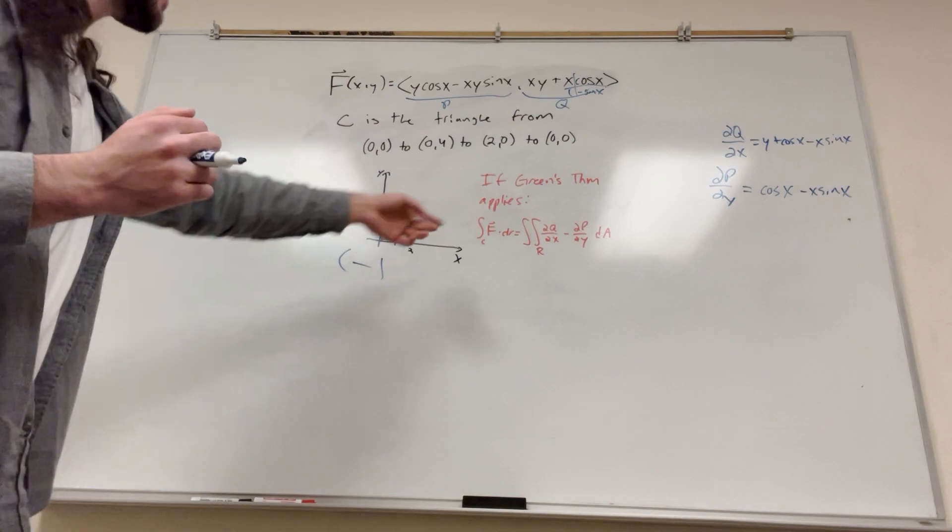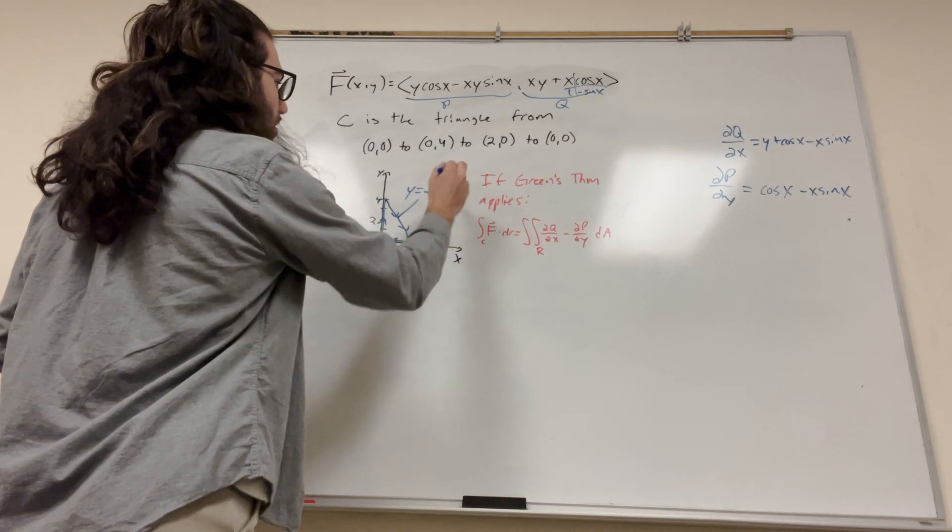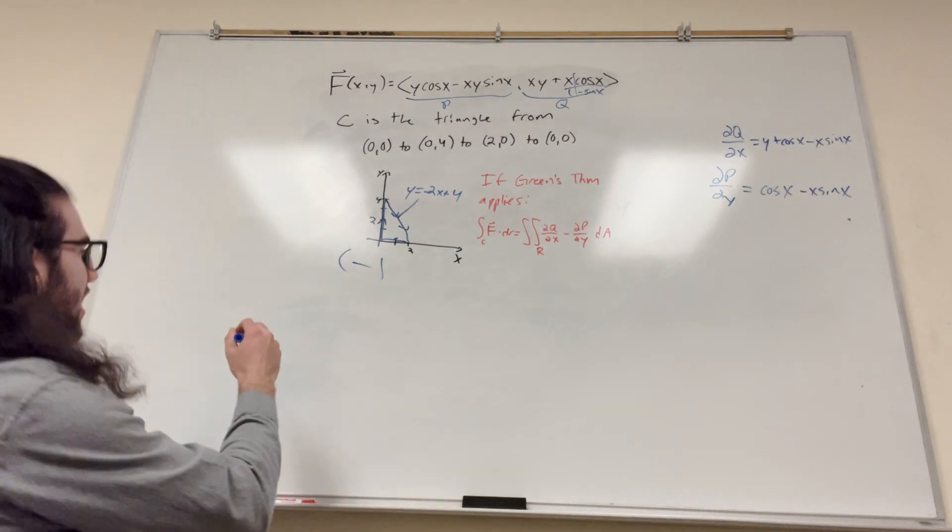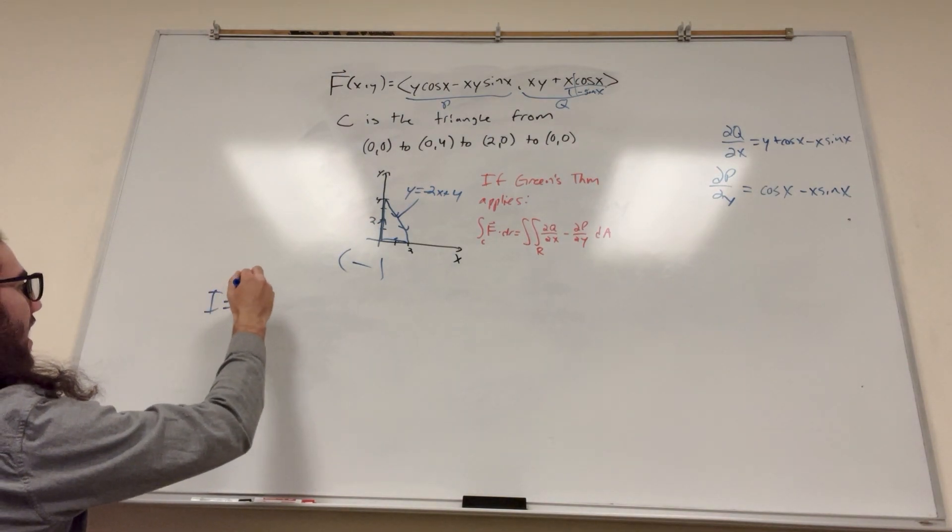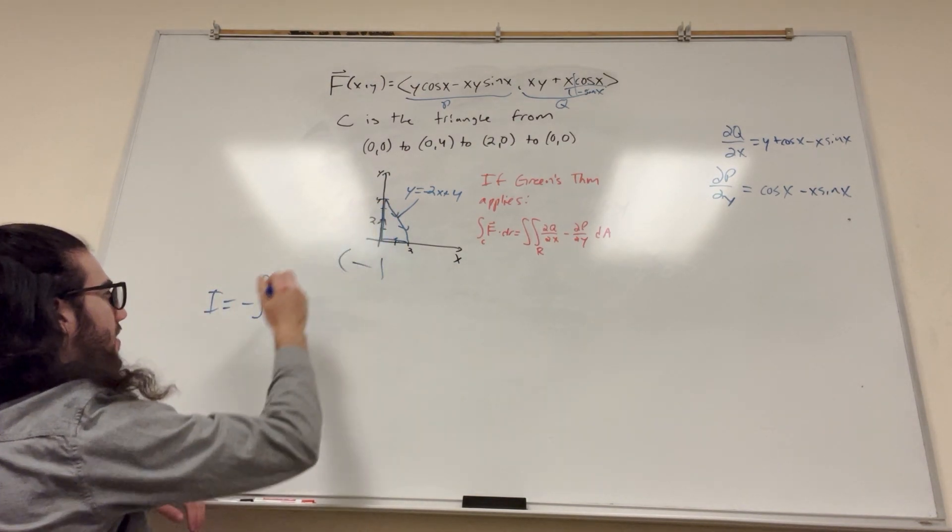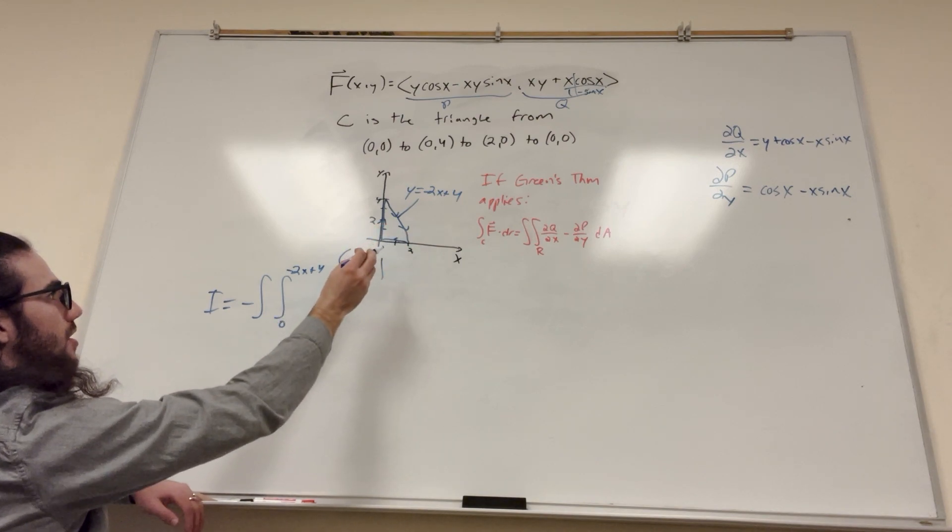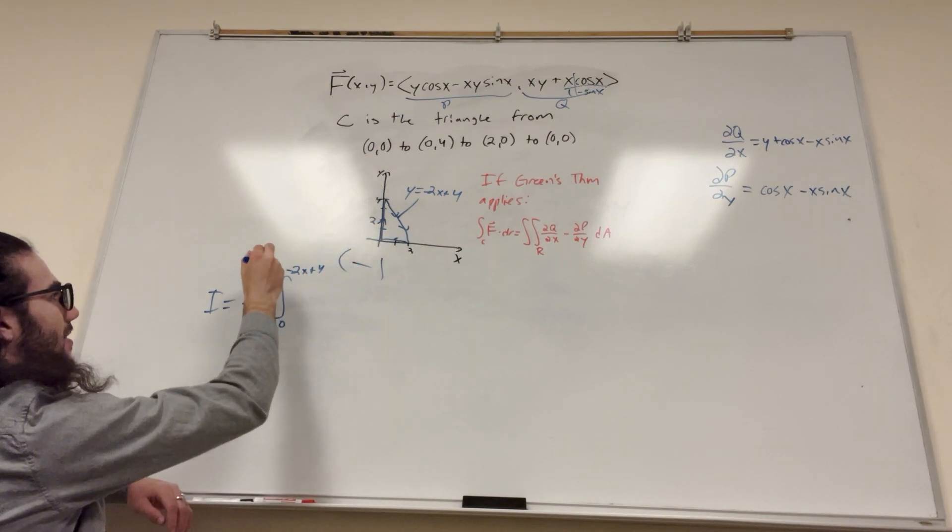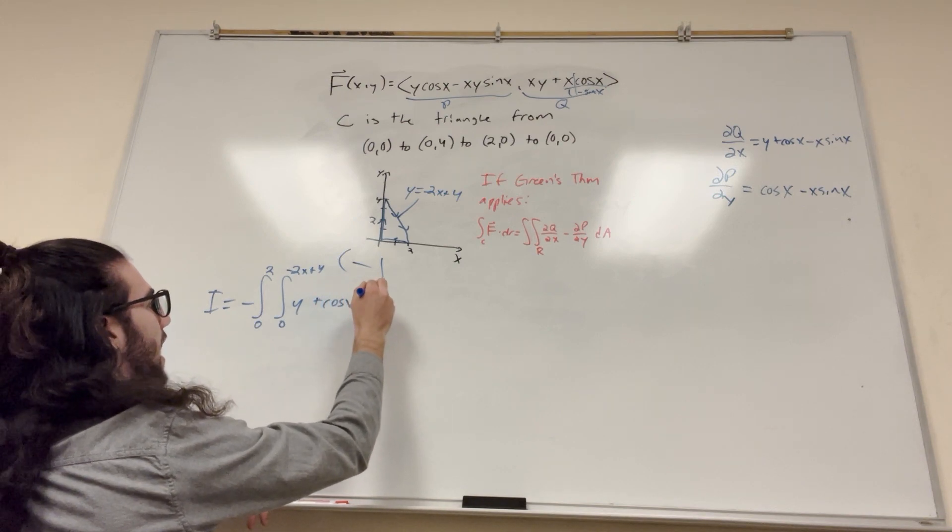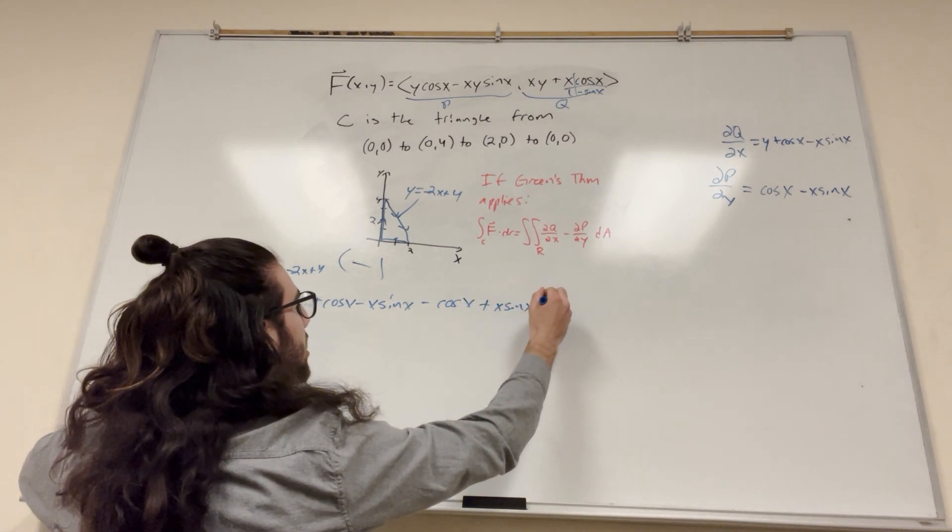Alright, now let's set up our integral. So we have everything we need. We have a region, we have this and that, we have all this. Let's first evaluate this line. This line is y equals negative 2x plus 4. Of course, you're going to need your point slope form. Everyone's like, I don't need point slope form anymore. Yes you do, you need it for calculus. Alright, so our integral, add our negative, don't forget about the negative. So it's going to be a double integral. So let's look at our region. I'm going to do dy first. So y goes from 0 to negative 2x plus 4, and then x goes from 0 to 2. So then we have our thing. So it's going to be y plus cosine of x minus x sine of x minus cosine of x plus x sine of x dy dx. Pretty cool.